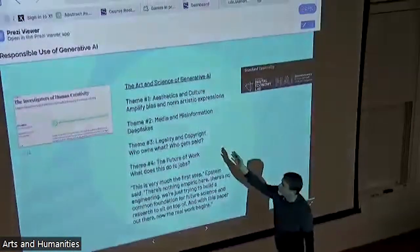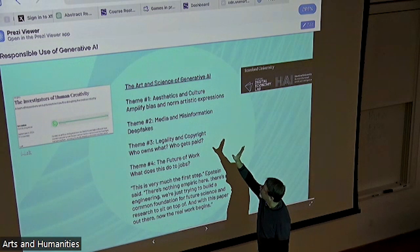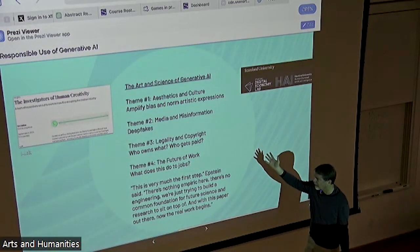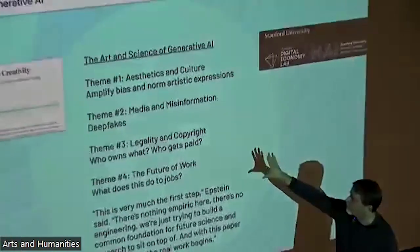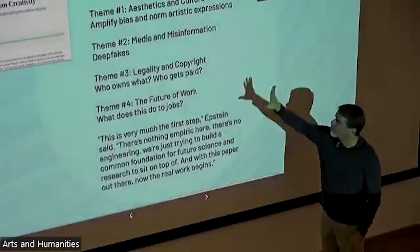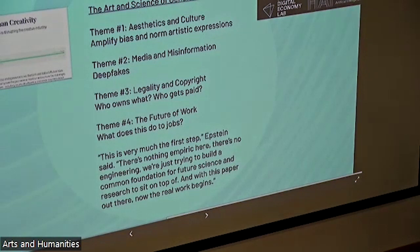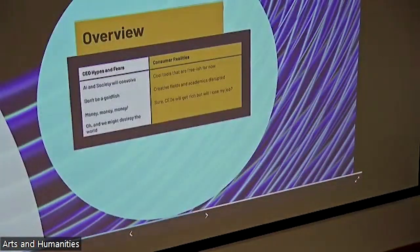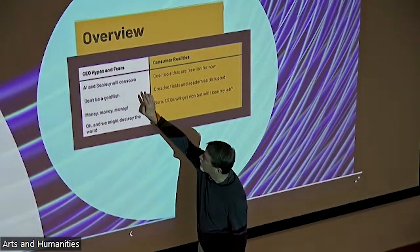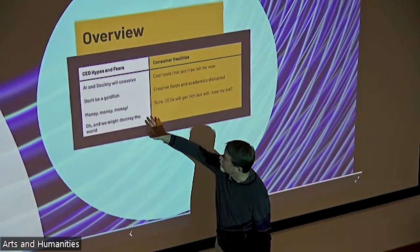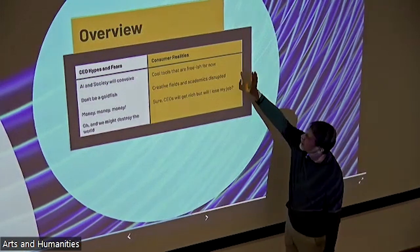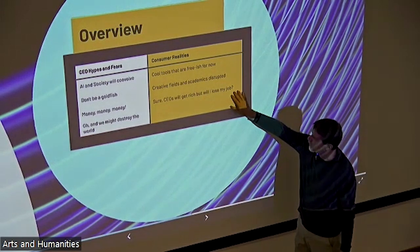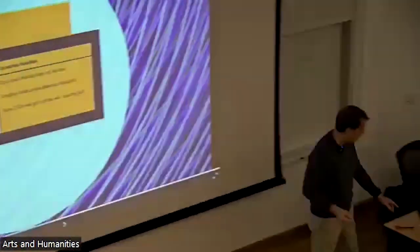Our friends at Stanford — Ting-Anne and colleagues — have started an investigation into human and AI creativity. They've come up with four themes; they haven't done a lot of science yet, but you can see the important problems they're looking at. Quick overview: the hypes and fears — AI and society will co-evolve, don't be a goldfish, there's a lot of money, and oh, we might also destroy the world. Consumer realities: interesting, cool tools that are free-ish for now. Creative fields and academics are being disrupted. CEOs will get rich — but how about you? What's this going to do to you? That's what I want you to think about.